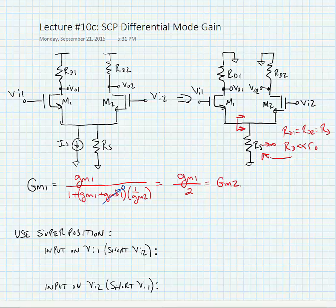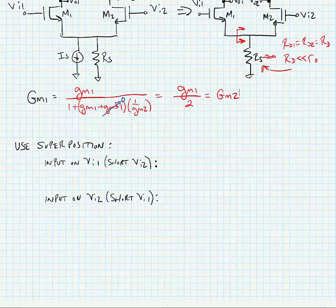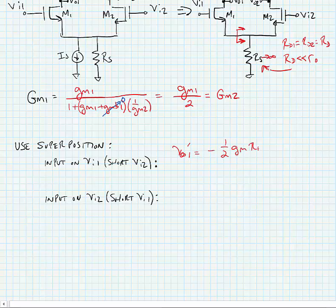Let's do analysis for the gain of this circuit using superposition. We put our input on VI1 and short VI2. Doing this, we can measure the output VO1 prime, which is equal to minus one-half GM times RD. VO2 prime is going to go in the opposite direction because we're essentially steering the current through that transistor, so it equals plus one-half GM times RD.